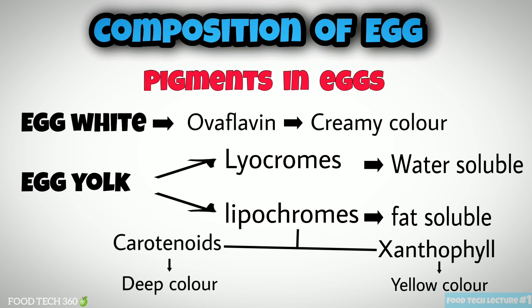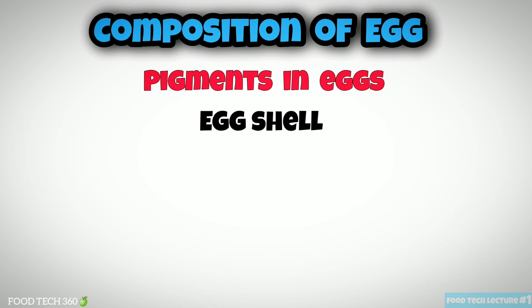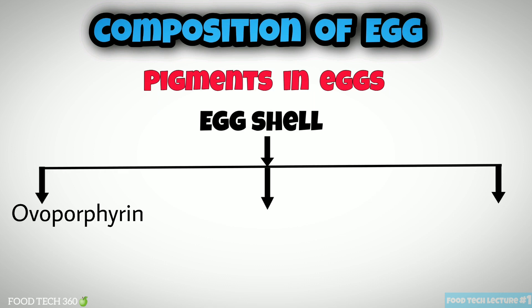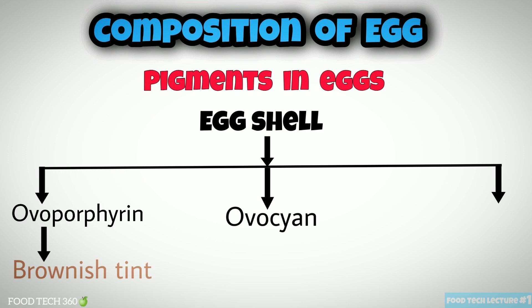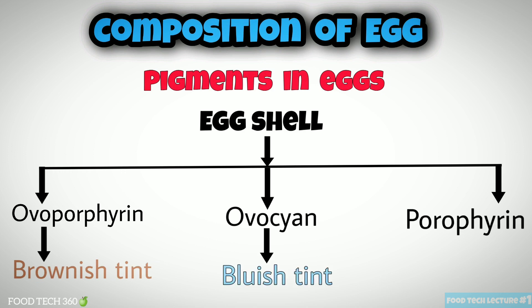Lipochromes are divided into two types: carotenoids and xanthophylls. Carotenoids are responsible for the deep color and xanthophylls are responsible for the yellow color of the yolk. Pigments present in eggshells are: ovoporphyrin, responsible for the brownish tint; oocyan, responsible for the bluish tint; and porphyrin, responsible for the pinkish color.